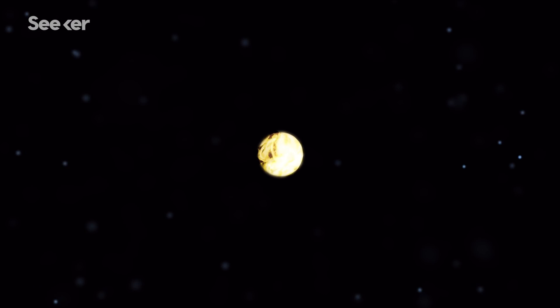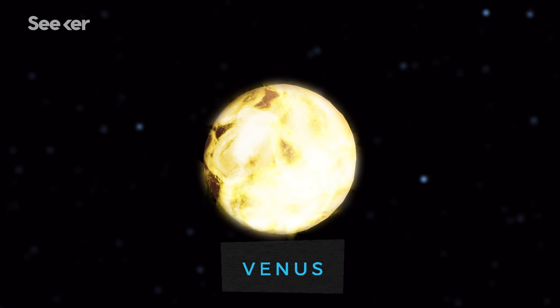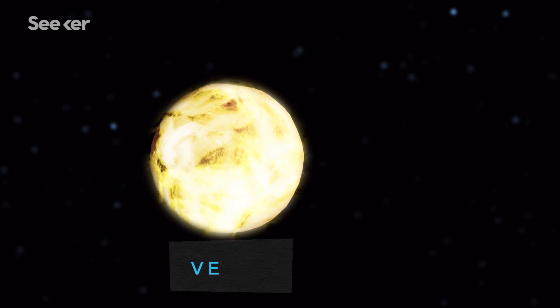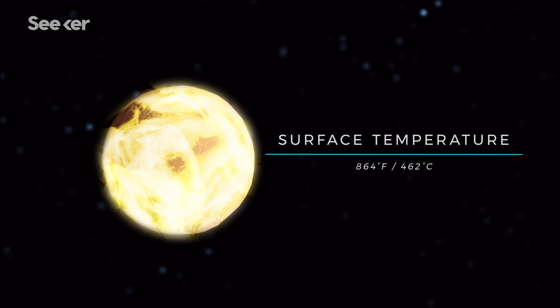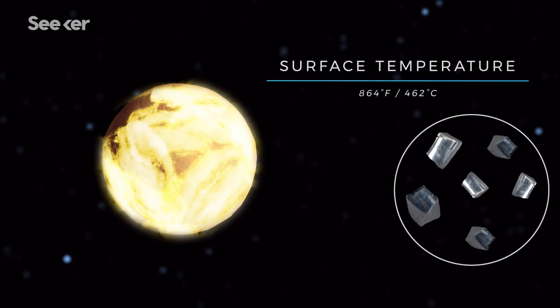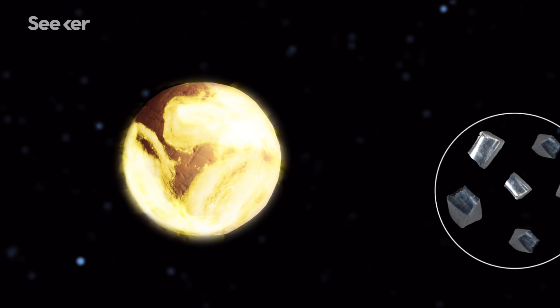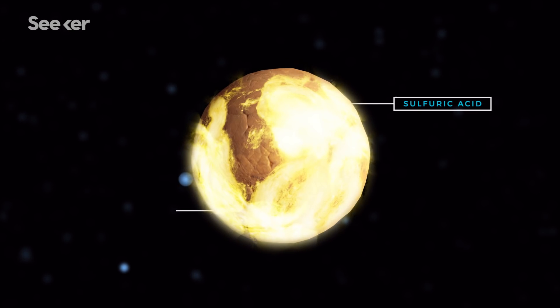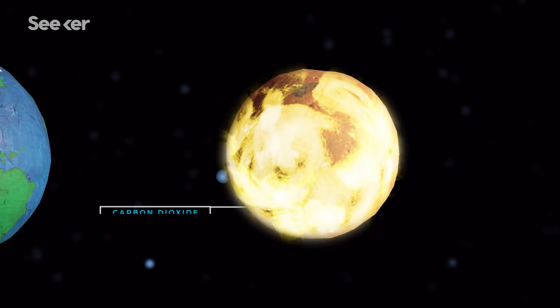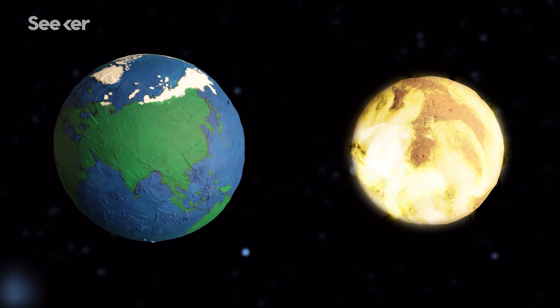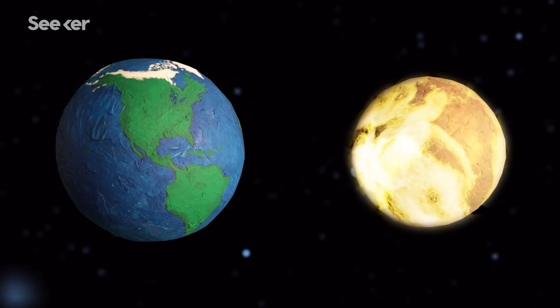There's a reason why Venus is often called the Hell Planet. Its average surface temperature is 864 degrees Fahrenheit, which is hot enough to melt lead. Its air is a suffocating stew of sulfuric acid and carbon dioxide, and its atmosphere is 90 times thicker than Earth's, which would literally crush you.